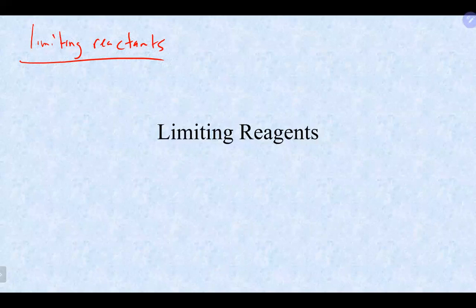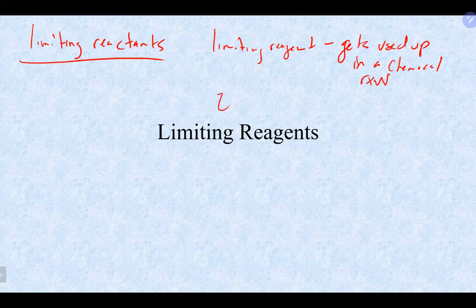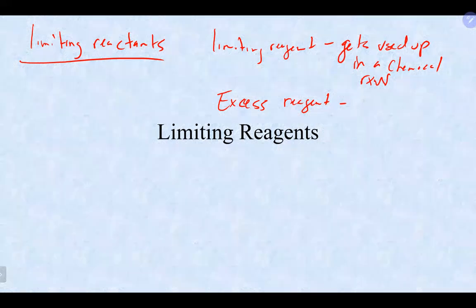There's always one reagent that gets completely used up — that is the limiting reagent. And then there's usually a reagent where you have plenty of it, which is the excess reagent. The excess reagent is the one where you have so much that there's actually some left over when the reaction is complete.